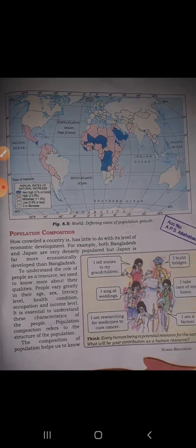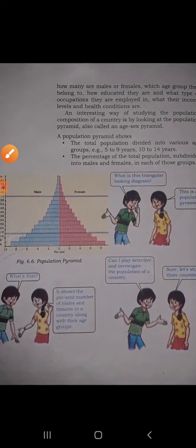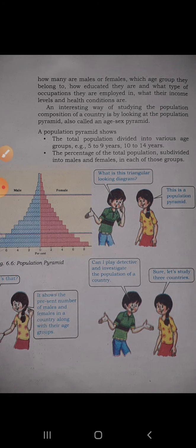Population composition helps us understand: how many males and females there are, what age groups they belong to, how educated they are, and what type of occupation they are doing. All these things together tell us about the population composition of a country.